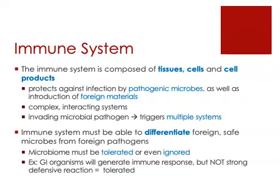Our microbiome has to be tolerated — or even ignored — by our immune system. All of those organisms that live in your gastrointestinal system will be seen and recognized by your immune system, which will generate a small response upon recognition. But your immune system will not generate what we would call a strong defensive immune reaction. That is tolerance — how the immune system works to tolerate organisms that are foreign to you but have a normal part in your body.